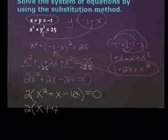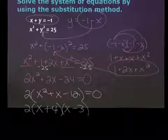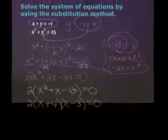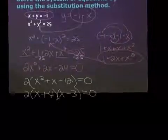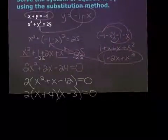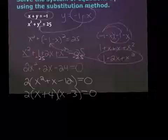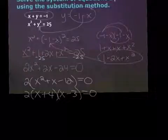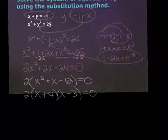x plus four, x minus three — factors of negative 12 that sum to positive one. Now if I'm multiplying by two on the left, how could I get rid of it? Divide by two — divide both sides by two. It's going to cancel.